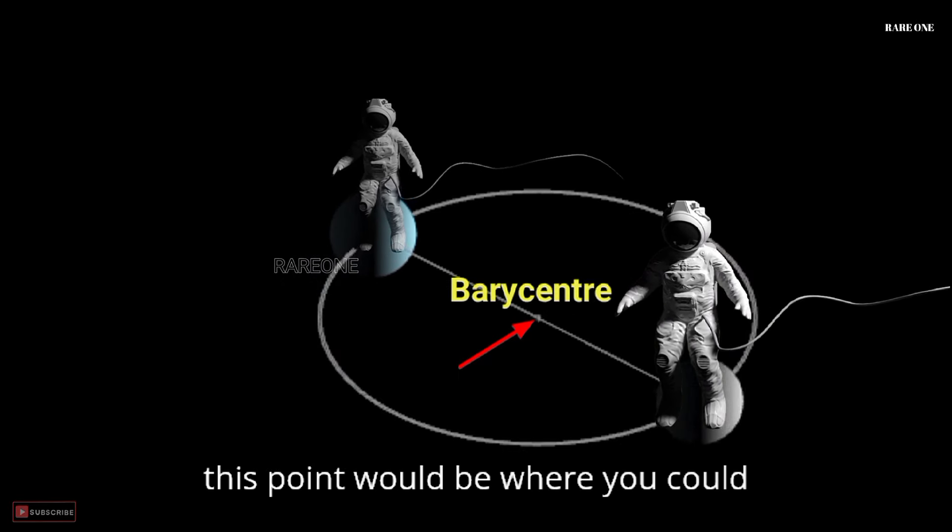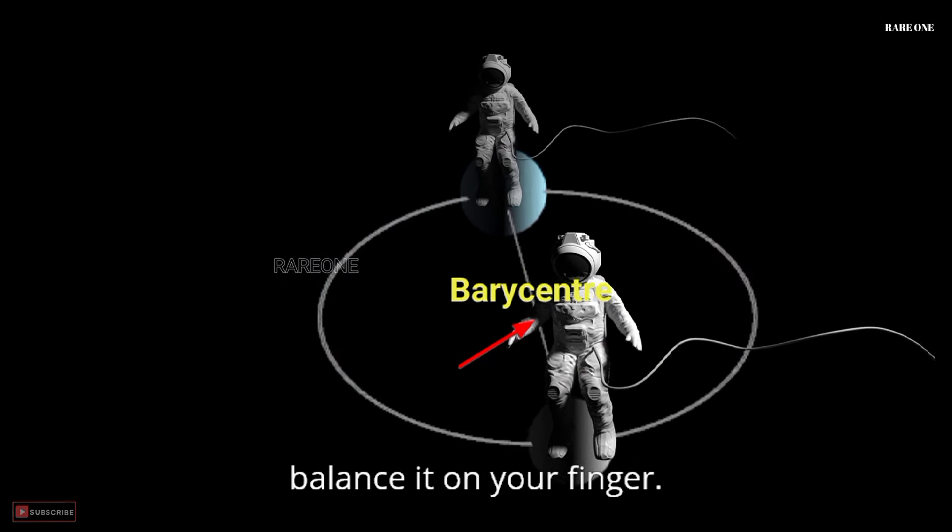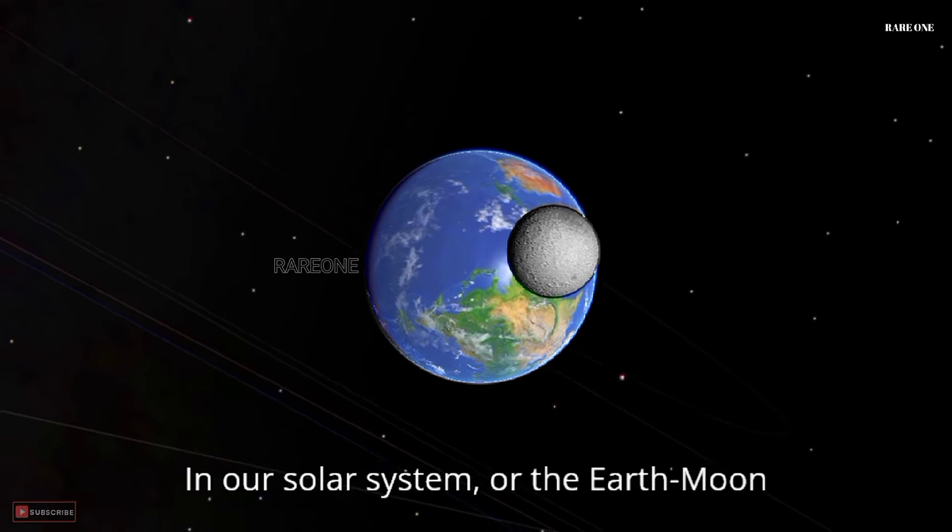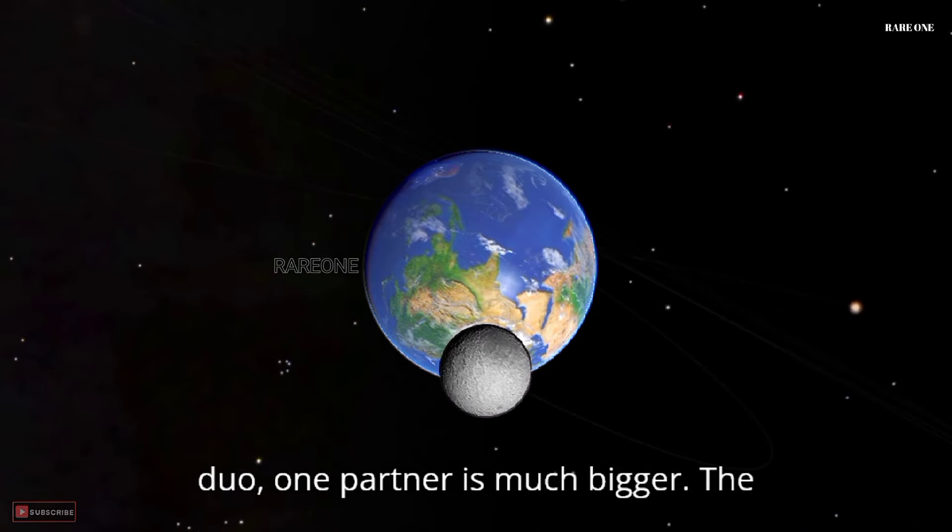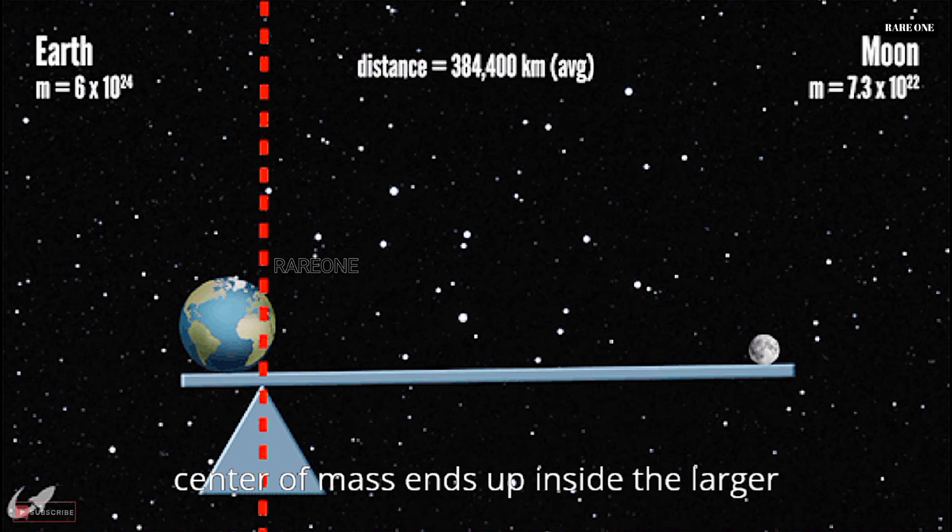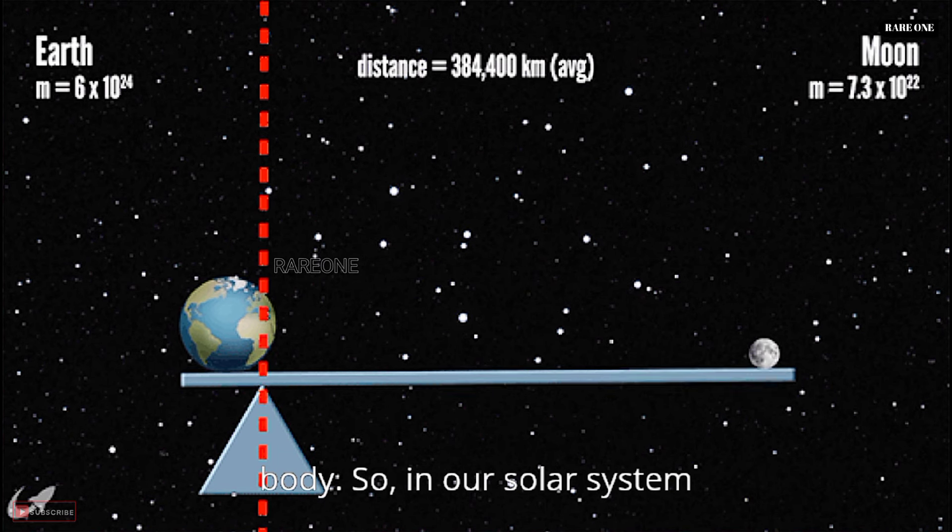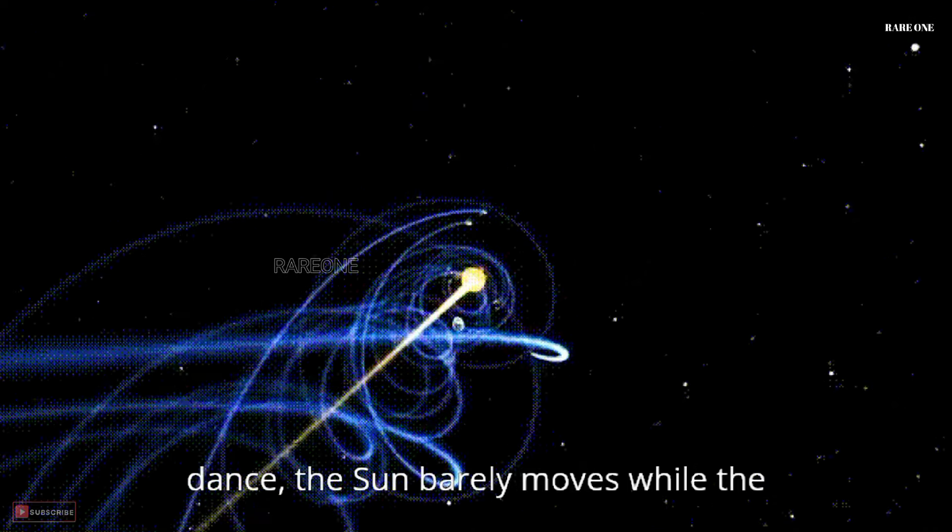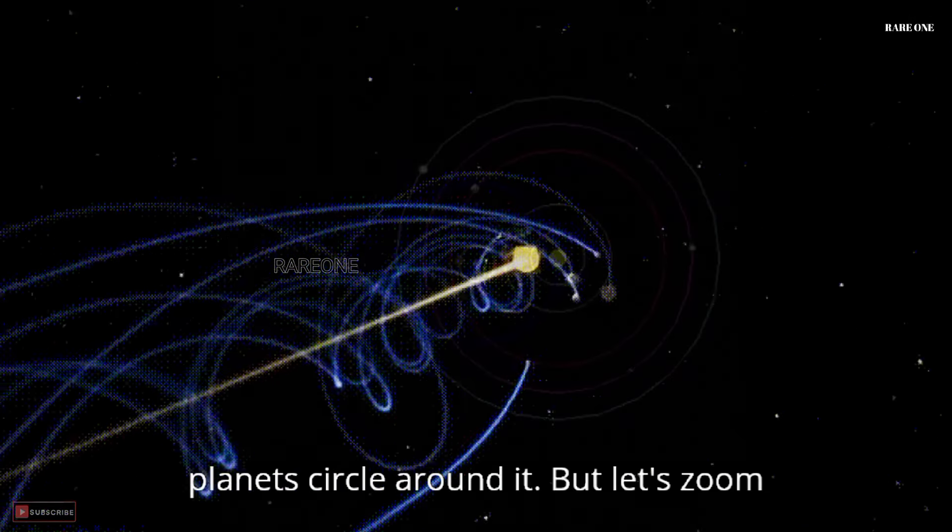If you could shrink this system, this point would be where you could balance it on your finger. In our solar system, or the Earth-Moon duo, one partner is much bigger. The center of mass ends up inside the larger body. So, in our solar system dance, the sun barely moves while the planets circle around it.